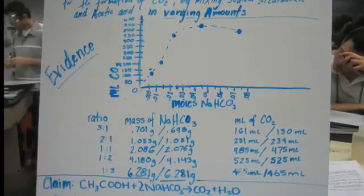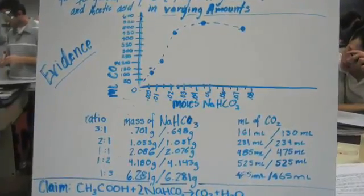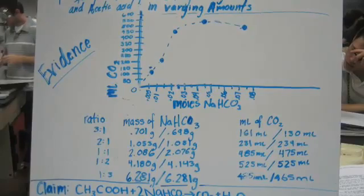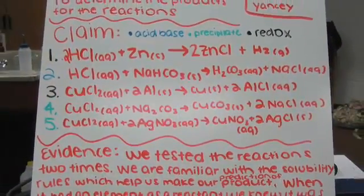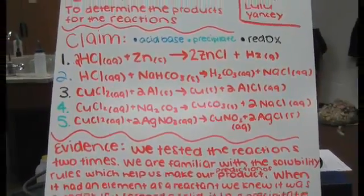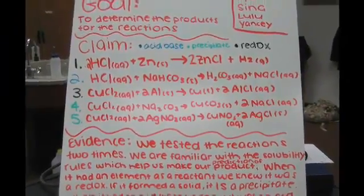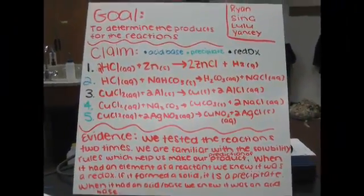Step 3 is creation of posters. Each group will produce a poster presenting their explanation or answer to the research question, along with their evidence and reasoning. This is not a detailed presentation of data, but a presentation of an argument, which is a conclusion supported with evidence.